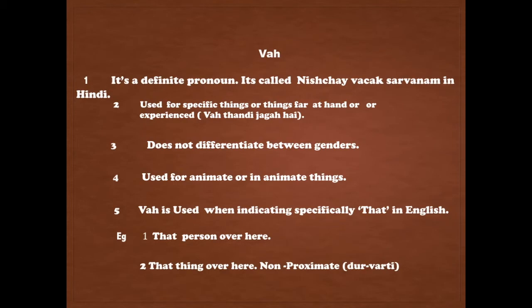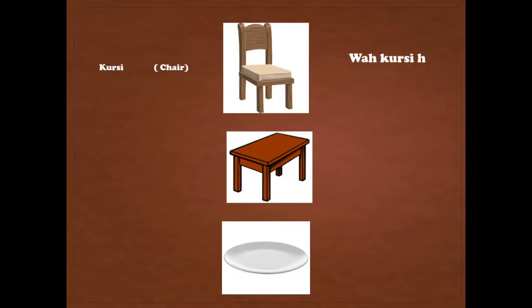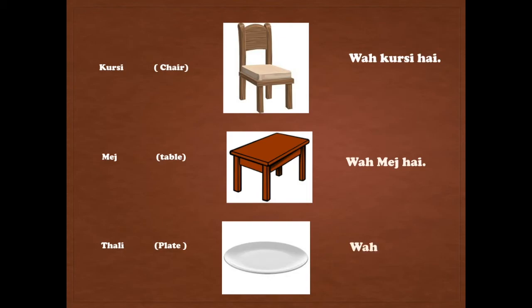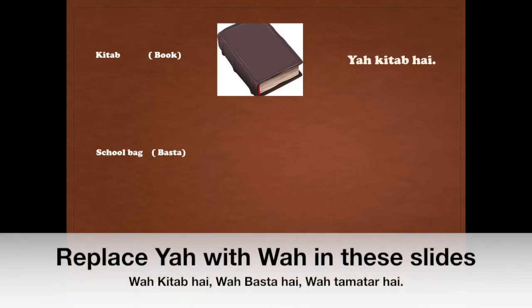Let's form sentences with vaha. Vaha kursi hai means 'that is a chair.' Mej meaning table: vaha mej hai, meaning 'that is a table.' Thali means plate: vaha thali hai. Kitab means book: vaha kitab hai, meaning 'that is a book.'